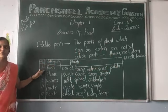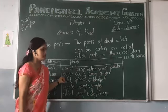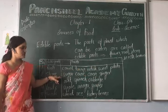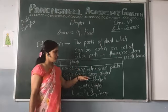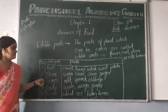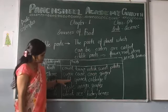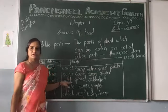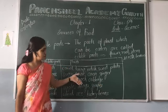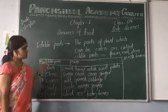Now the stems: the stems of plants which are eaten include sugar cane, onion, and ginger. Now the leaves: the leaves which are eaten from plants include spinach, cabbage, pudina. All these are the leaves which we eat.